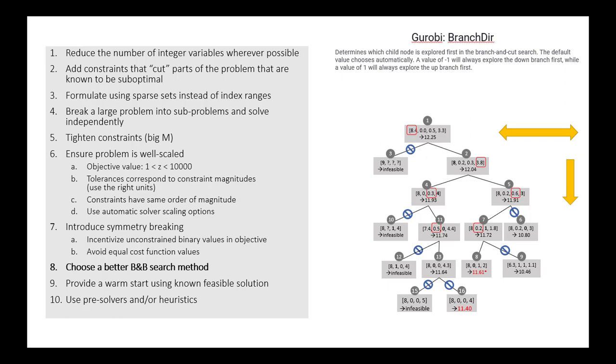So the first thing that you can do, and this is one where it doesn't always produce any benefit, but it's something to at least think about, is something called the branching direction. And in Gurobi and in other solvers, you can specify sometimes the preferred method for how the solver will go about choosing the next node to explore.